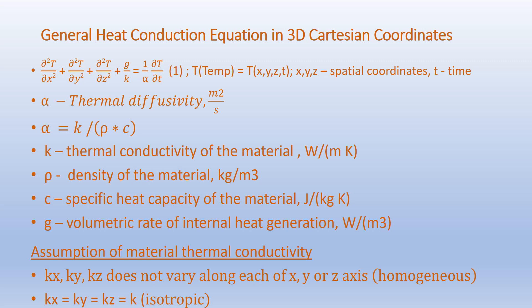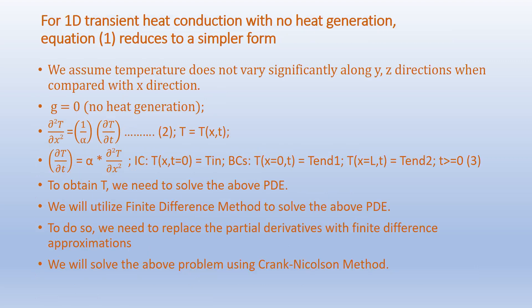C is the specific heat capacity in joules per kilogram-Kelvin. G is the volumetric rate of internal heat generation in watts per meter cubed. Regarding material assumptions: thermal conductivity along x, y, and z axes does not vary — this is the homogeneous condition — and thermal conductivity follows the isotropic condition where kx equals ky equals kz equals k. For 1D transient heat conduction with no heat generation, we assume temperature does not vary significantly along y and z directions compared to x, and the heat generation term G equals zero.